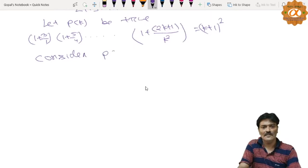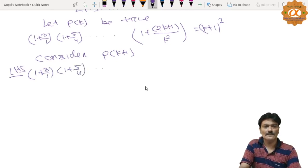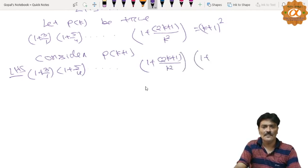consider P(k+1). P(k+1) LHS will be (1 + 3/1) multiplied by (1 + 5/4)...(1 + (2k+1)/k²). Next term is (1 + 2(k+1)+1)/(k+1)².